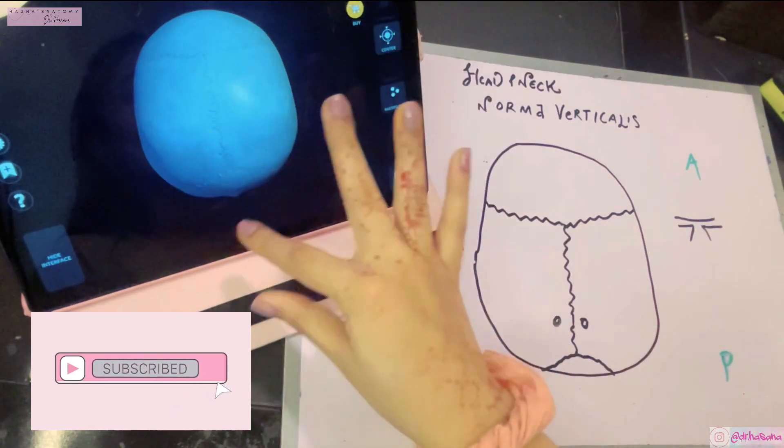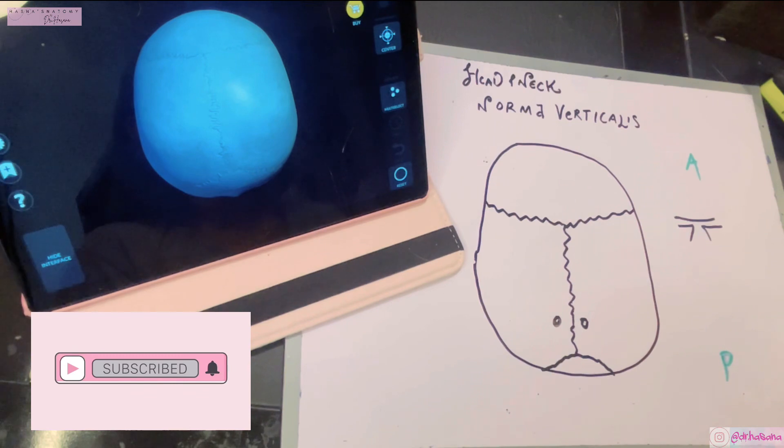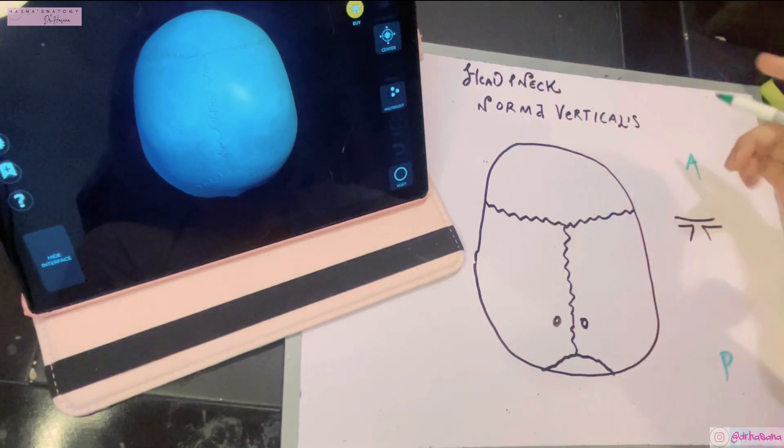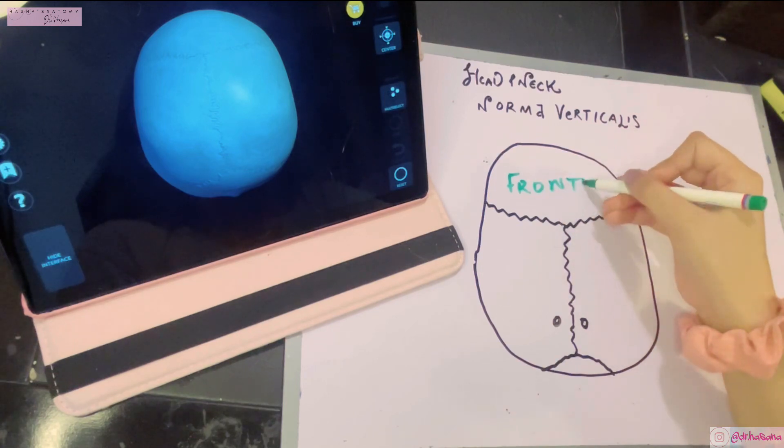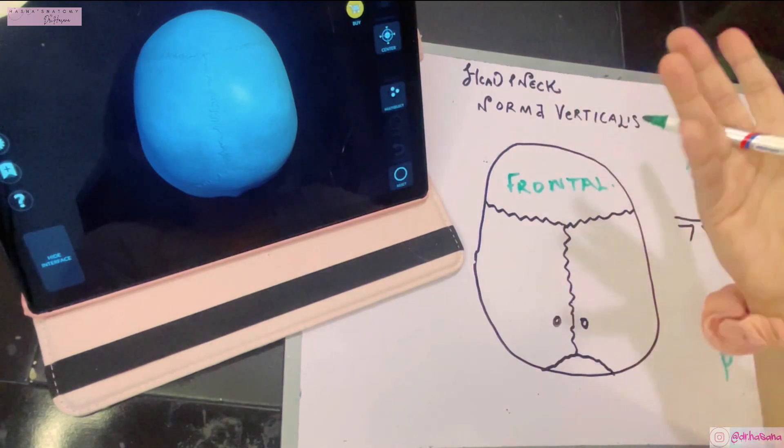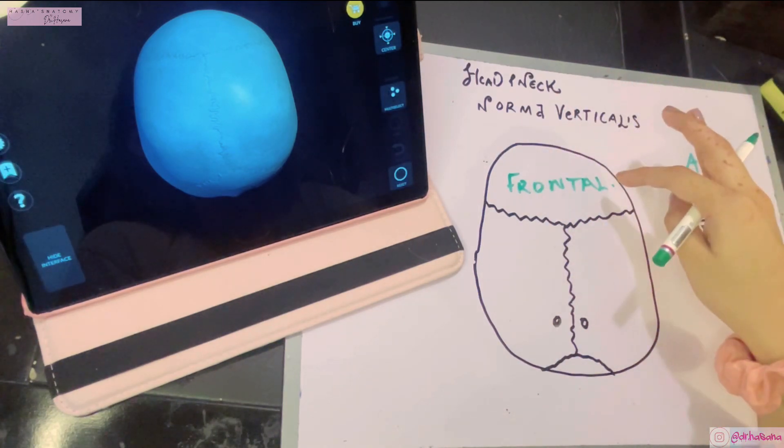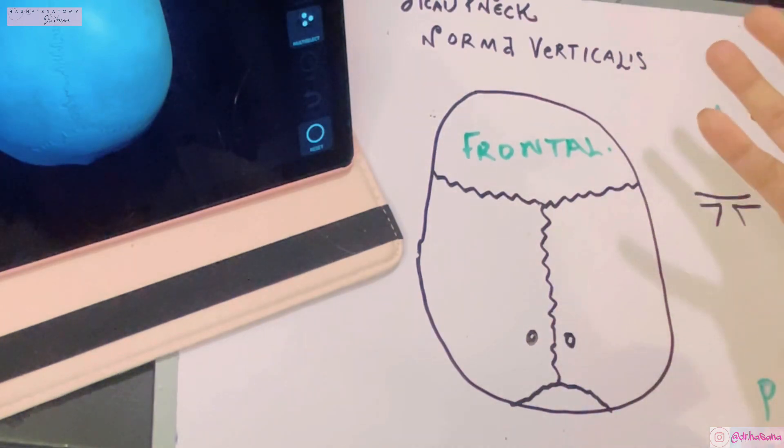Here is the norma verticalis. You are viewing this skull from the top. The first bone that you will encounter anteriorly is the upper part of your frontal bone. The frontal bone forms the frontal area, which is actually the forehead of your face. Then posteriorly we have the uppermost part of the occipital bone of the skull. And on either side we have the two parietal bones. The parietal bones are two in number that are seen in the norma verticalis.